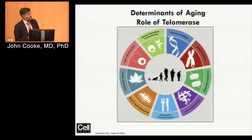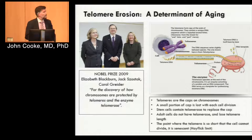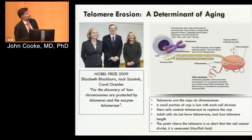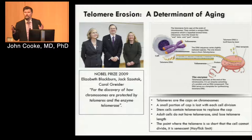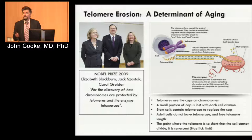Telomere erosion is a determinant of aging. Three American scientists won the Nobel Prize for their characterization of the telomere and telomerase, the enzyme that restores telomeres. Somatic cells don't have this enzyme. With each cell division, the telomere — the protective cap on the end of every chromosome — becomes shorter. A telomere in a young normal human is about 8 to 10 kilobases. It becomes shorter with each cell division, and at some point it becomes so short that it triggers a DNA injury response and the cell becomes senescent.